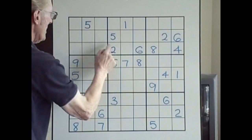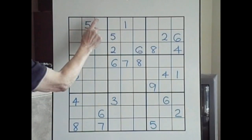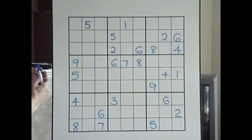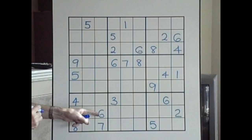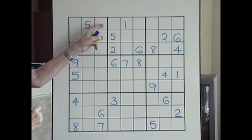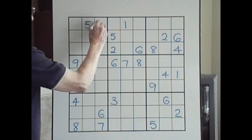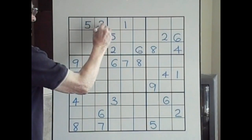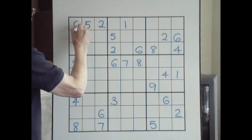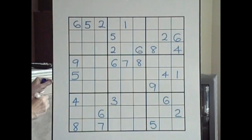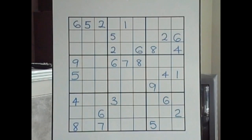Middle, bottom, top. If this is a two-six, I keep that in my head, I look down — there's a six down in here — so that has to be the two and this has to be the six. So that was some good progress right there.